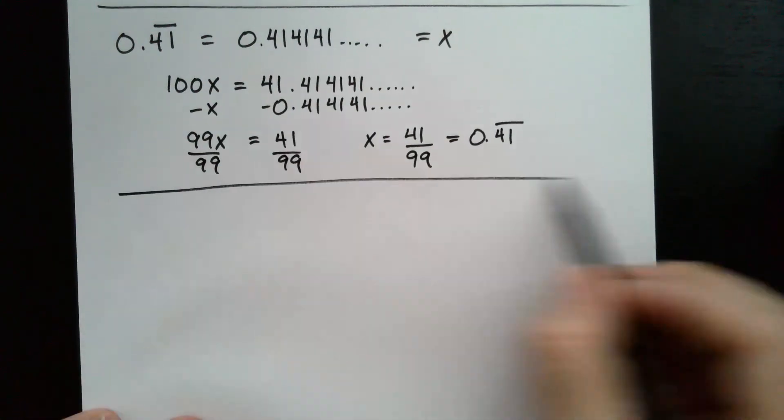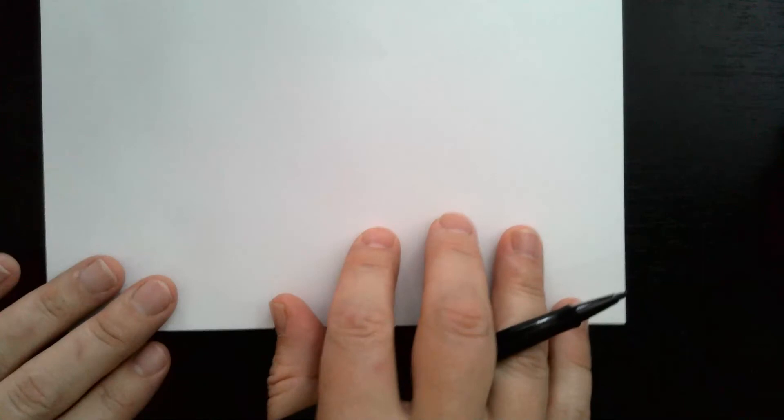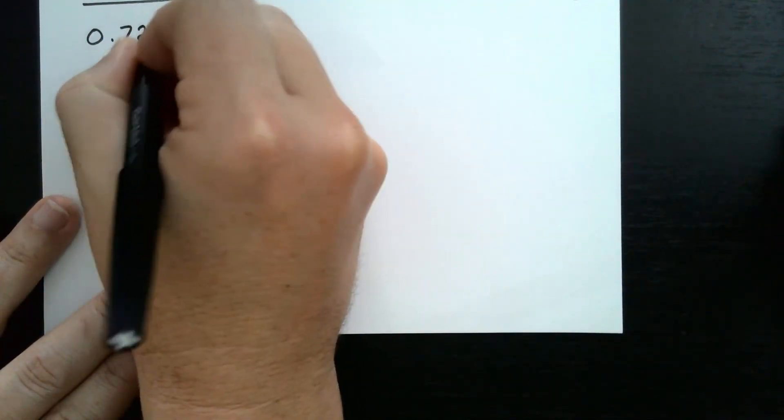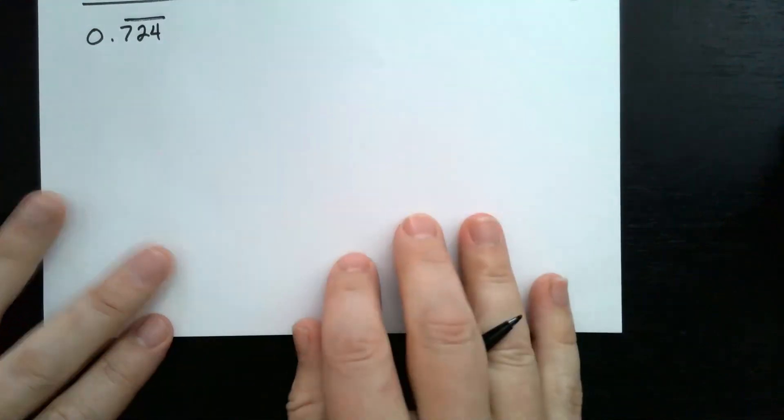Okay, let's do one last example. So on this one, I have 0.724 repeating. So this time, three digits are repeating.